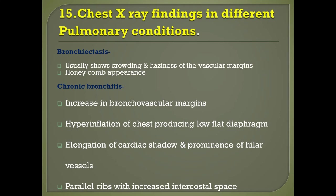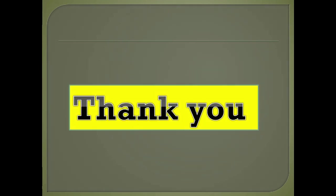The last question covers chest X-ray findings in different pulmonary conditions. In bronchitis, you will see honeycomb appearance with crowding and haziness of the vascular margins. In pleural effusion, you will see obliteration of the costophrenic angle. In chronic bronchitis, you will see increase in bronchovascular markings, hyperinflation of the chest producing a low flat diaphragm, elongation of the cardiac shadow, prominence of hilar vessels, and parallel ribs with increased intercostal space.